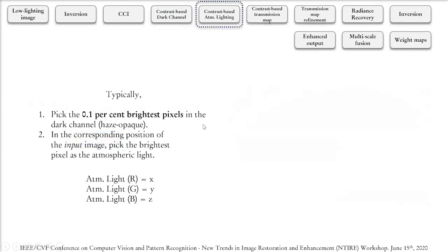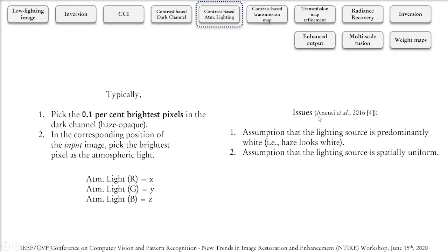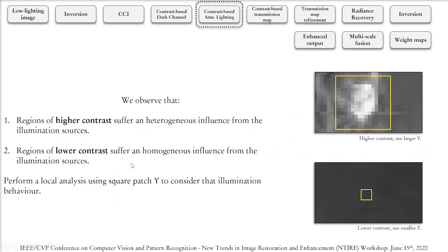Atmospheric lighting models are typically calculated by considering the highest intensity pixels in a dark channel and then using them to come up with three values in R, G, and B to represent the atmospheric lighting of an entire image. This common approach comes with two main issues: the assumption that the lighting source is predominantly white and that it's spatially uniform. Those are not true for our low lighting underwater images, which typically use multiple artificial lighting sources that are non-uniform.